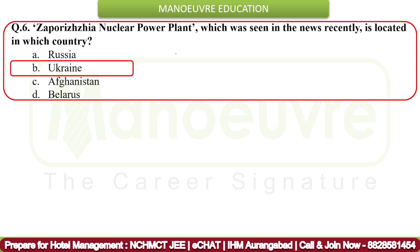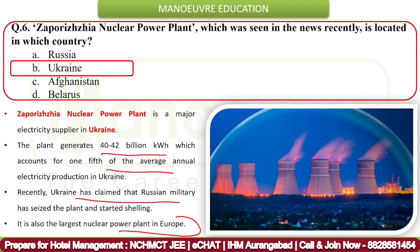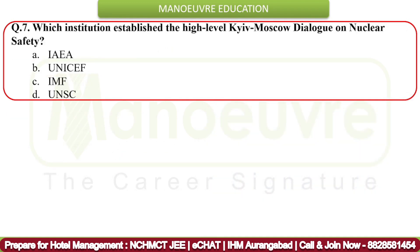Next question: Zaporizhzhia Nuclear Power Plant, which was seen in the news recently, is located in which country? The correct answer is Ukraine. The Zaporizhzhia Nuclear Power Plant is a major electricity supplier in Ukraine, generating 40 to 42 billion kilowatt-hours, accounting for one-fifth of the average annual electricity production in Ukraine. Ukraine claimed that Russian military seized the plant and started shelling it. It is also the largest nuclear power plant in Europe.